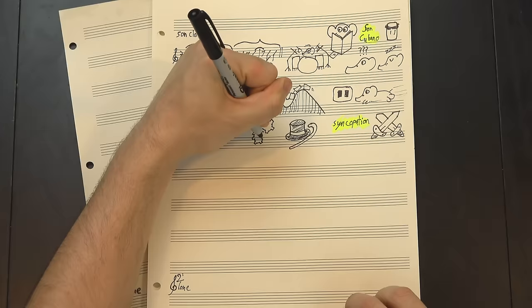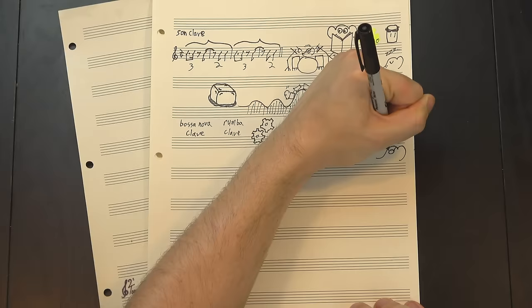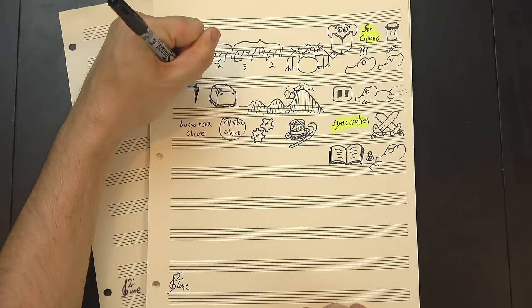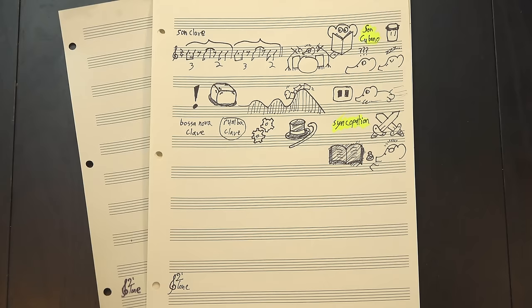The other common clave patterns are the rumba clave and the bossa nova clave, both of which are effectively more complex versions of the son clave. Well, that may not be historically accurate. The rumba clave at least probably predates the son clave, although again, the history is not well-recorded. But structurally, at least, it looks like a variation, so for our purposes, that's close enough.